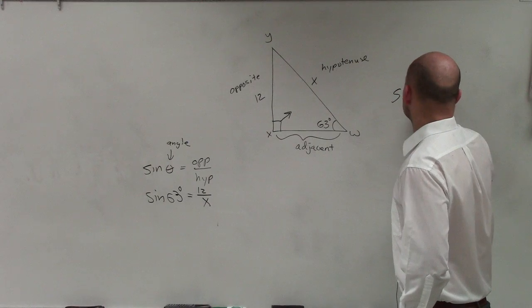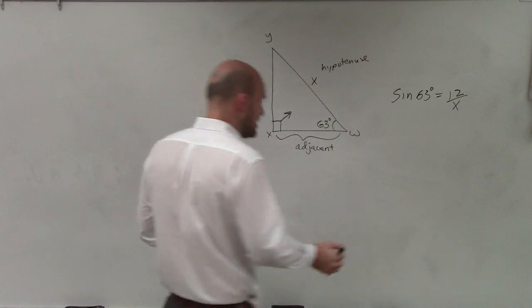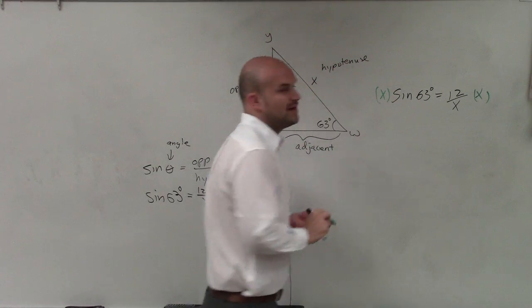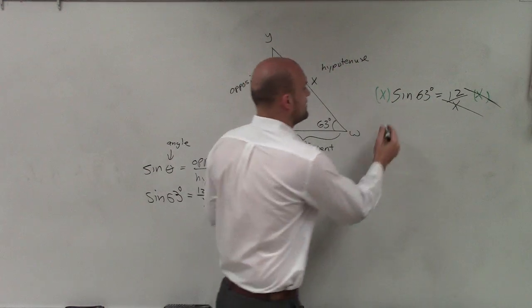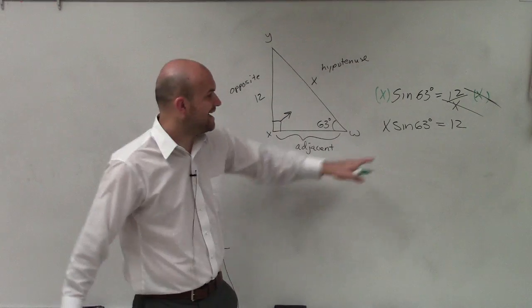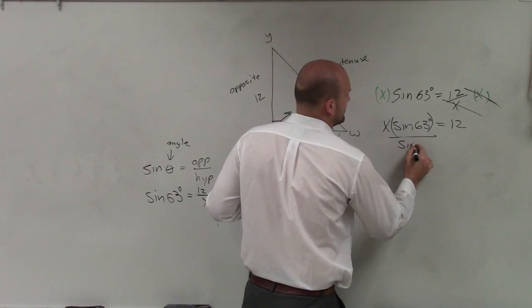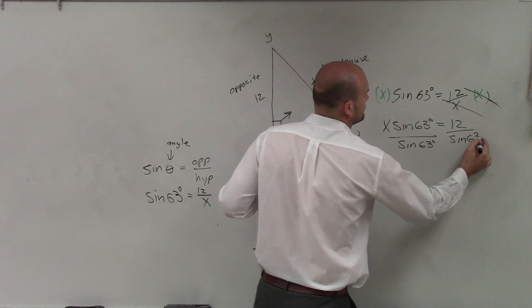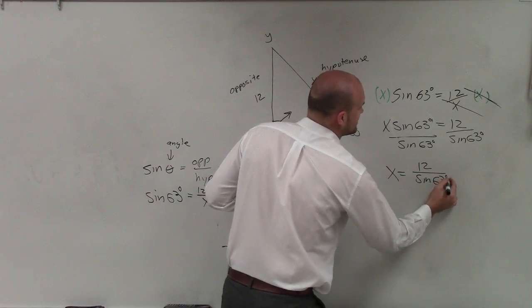So sine of 63 degrees equals 12 over x. When we're trying to solve for x, we have to get the x off the denominator. So what I'll do is I'll multiply by x on both sides. By multiplying x on both sides, these now divide to 1, and I'm left with x times the sine of 63 degrees equals 12. Now again, I need to solve for x, correct? So what I'm going to do is I'm going to divide by sine of 63 degrees. Therefore, x equals 12 divided by the sine of 63 degrees.